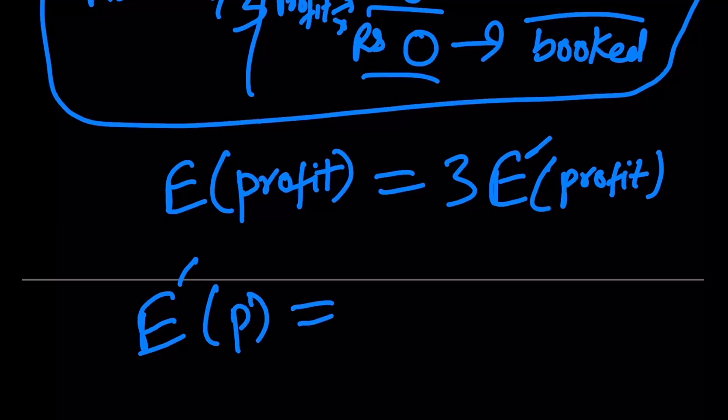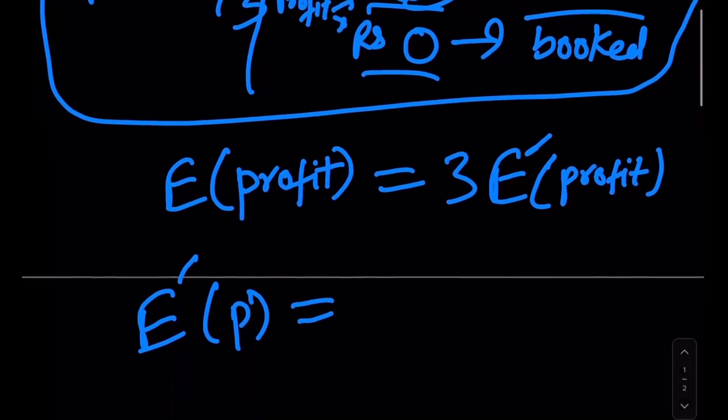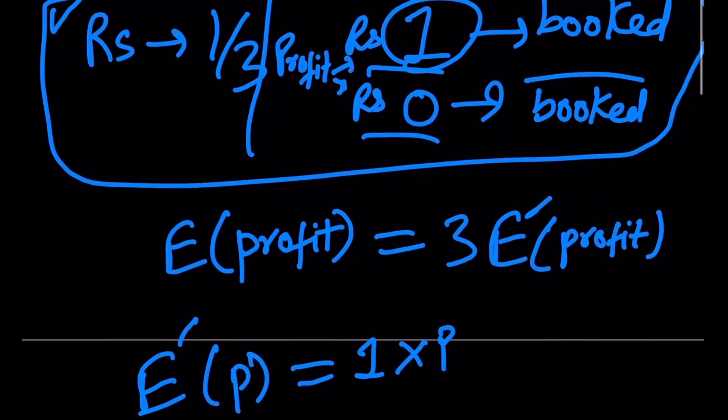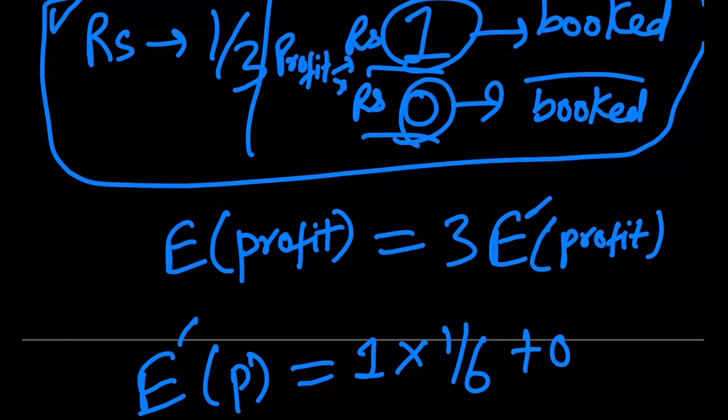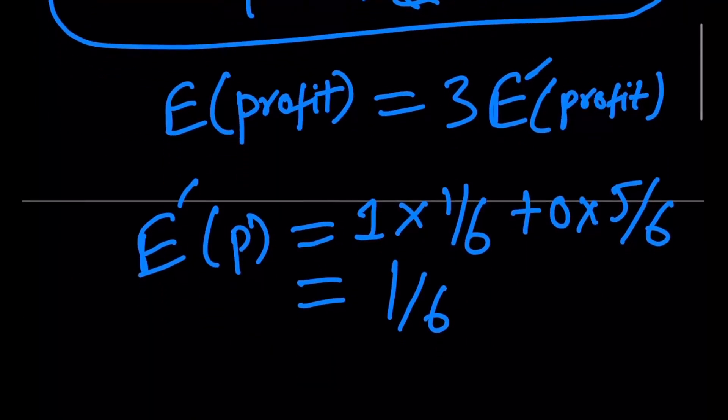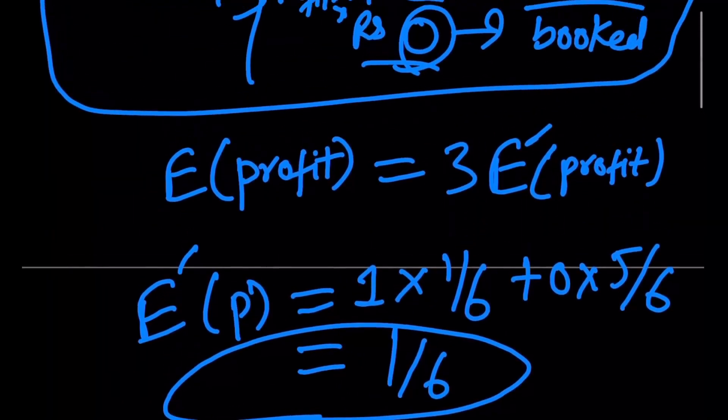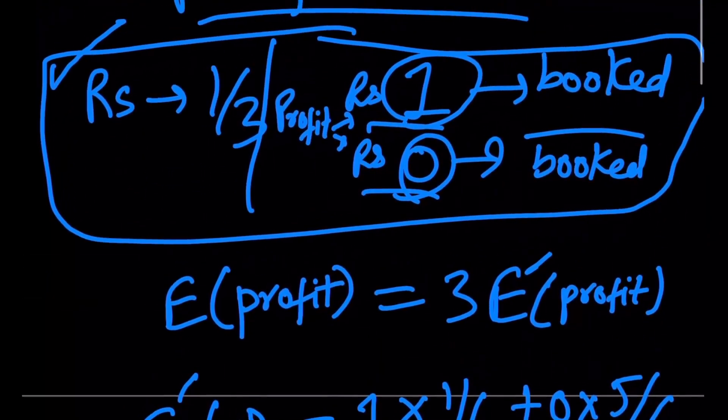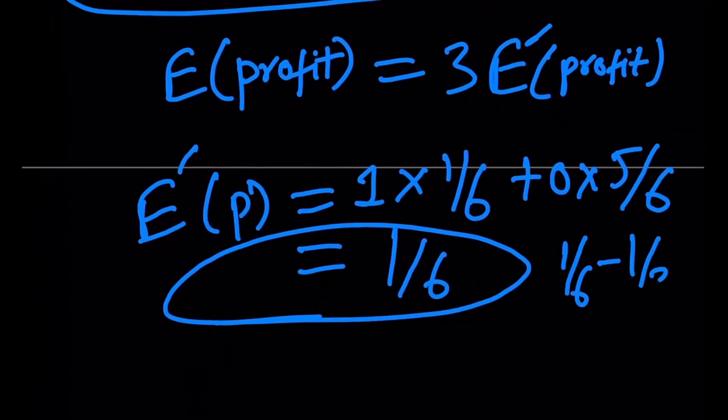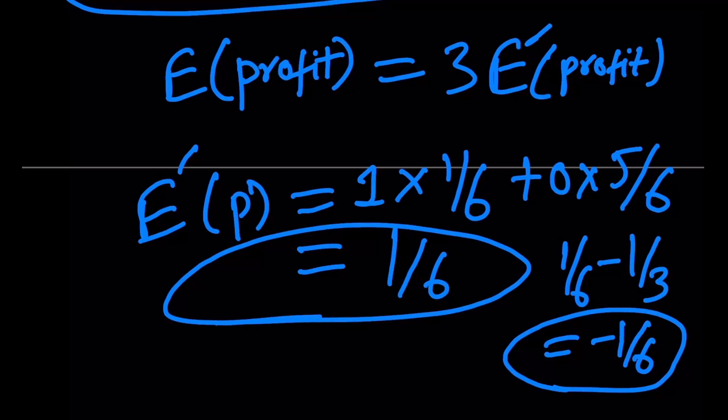So it is pretty simple to calculate the profit E dash. I'm just going to denote profit by P now. It is 1 into the probability that we get our booked value, which would be essentially 1/6, right, because each of the outcomes, each of the six numbers are equally likely. And it's 0 into the probability that we don't get it, which will be 5/6. So this comes out to be 1/6. So the expected profit for each game is 1/6. And the expected amount, well, it's obvious that the amount that we have to pay is 1/3. So we can already see that 1/6 minus 1/3 is negative 1/6. So playing this game is not going to yield us a profit on average.